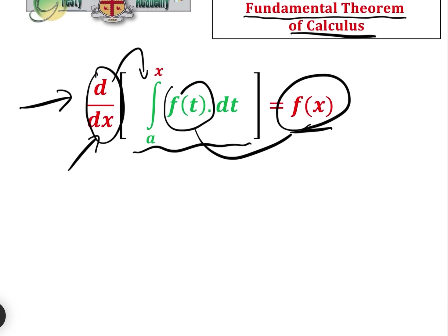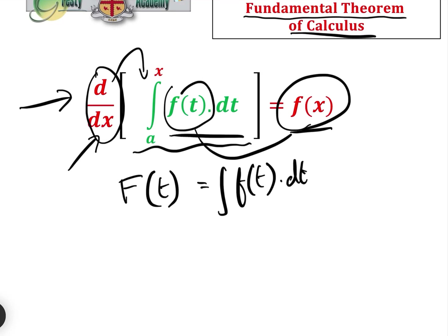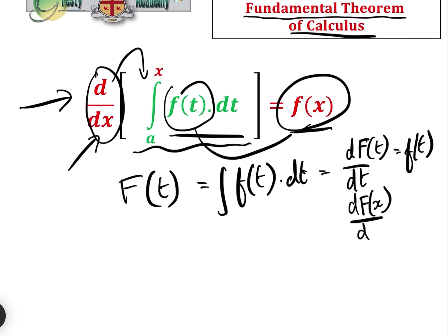This is probably a rather informal proof. Let's say that F(t) is equal to the integral of f(t) dt — i.e. the integral of that bit. That means obviously that if we differentiate F(t) with respect to t, we get f(t). Basically, if F(t) is the integral of f(t), then differentiating gets us back where we started. And there's nothing special about the letter t, so we can also say that d(F(x))/dx equals f(x).